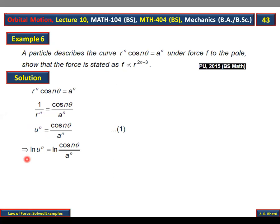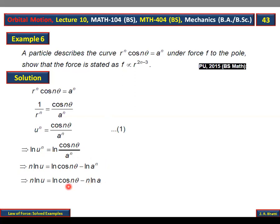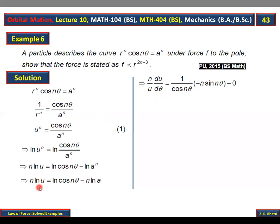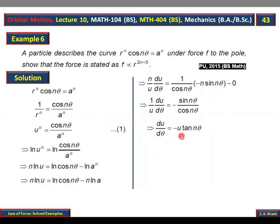Derivative lene se pehle log ki property lagate hain: log ke aage jo cheez hai uski power neeche aa jaayegi, yani n log u banega. Udhar log ka formula lagaenge: log cos(n theta) minus n log a aa jaayega. Agle step mein a ki power n bhi neeche utri, to n log se pehle lag gaya. Ab is position mein derivative lete hain: 1 over u, du over d theta aata hai; n apni jagah rahega. Log u ka derivative 1 over u, aur u ka phir lena padega with respect to theta — yeh aayega n over u, du over d theta. Cos(n theta) ke liye 1 over cos(n theta) aayega, phir cos(n theta) ka derivative minus sin(n theta), aur constant ka 0. Simplification se 1 over u, du over d theta, n se cancel ho gaya, aur du over d theta equal to minus u tan(n theta) aa gaya.